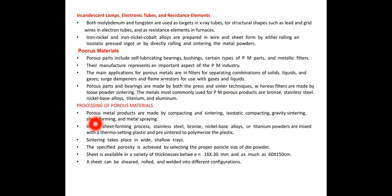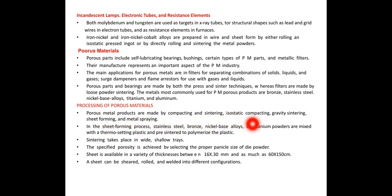Processing of porous materials: porous metal products are made by compacting and sintering, isostatic compacting, gravity sintering, sheet forming, and metal spraying. These are the different techniques.